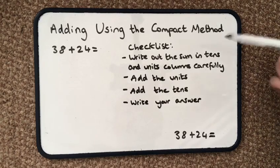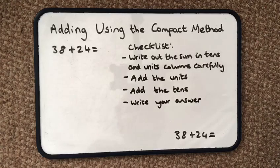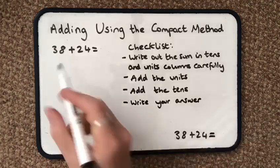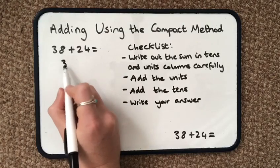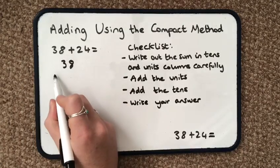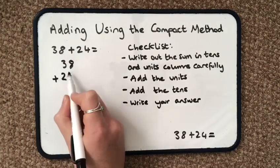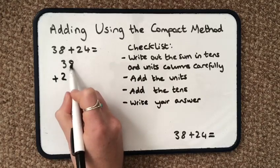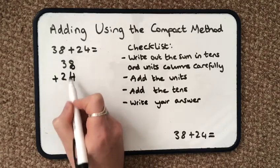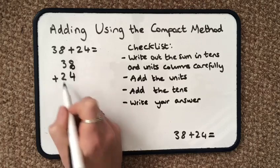So adding using the compact method. In my checklist, the first thing it says is write out the sum in tens and units columns carefully. Sum in this instance just means the calculation. So I'm going to write 38 plus 24 and I have made sure that my units are together and my tens are together.